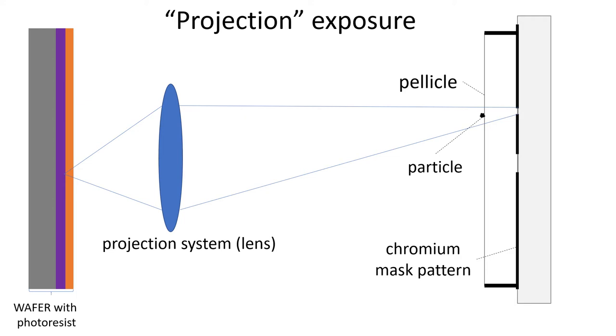So it would be like 6 millimeters away from the surface of the chromium where you have the pattern. And in this way, when you do a projection, the particle is out of focus. And so it is not visible.